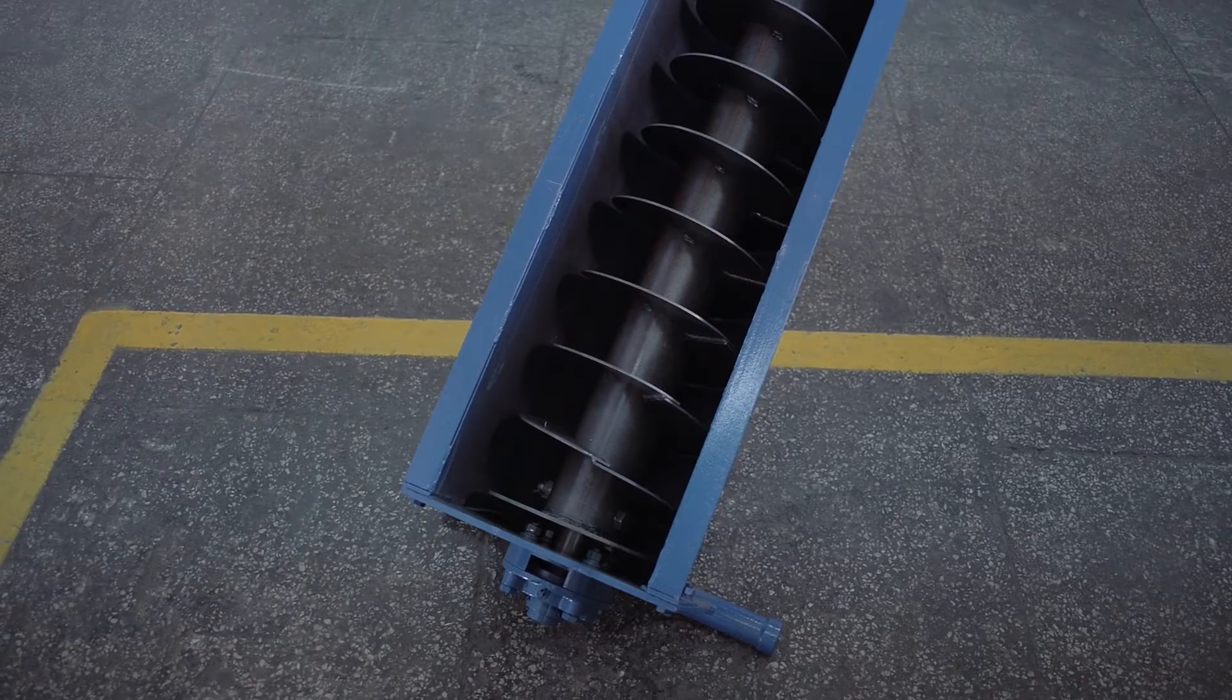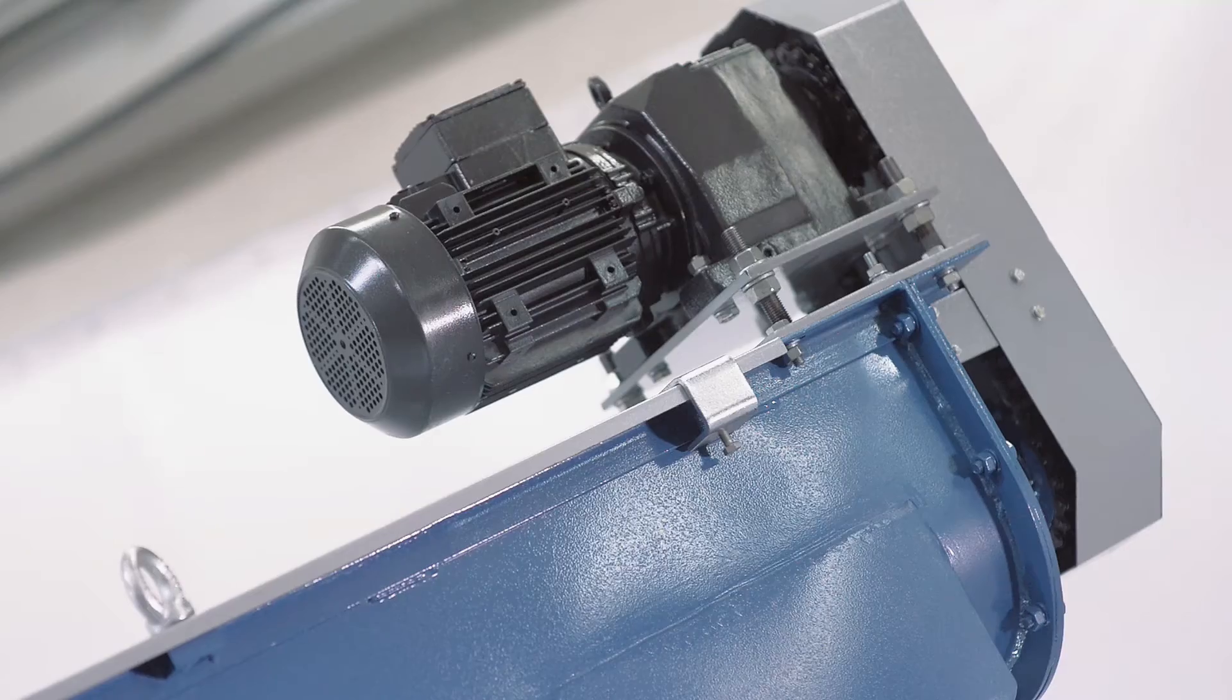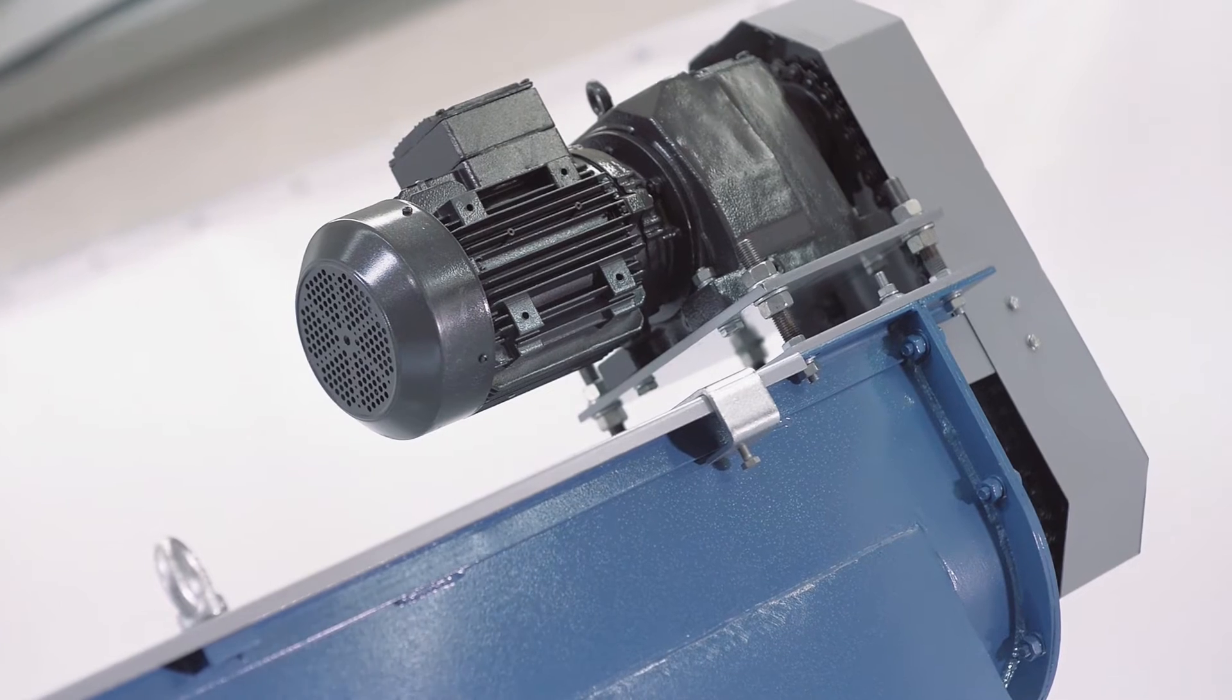Let's find out about the main parts of the screw feeder. There is a screw fixed on bearings inside of the trough which is rotated by a gear motor through a chain transmission.